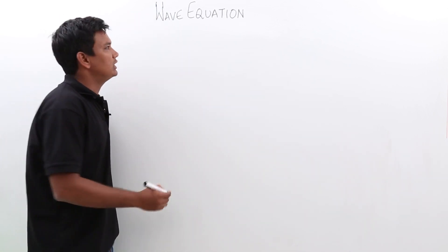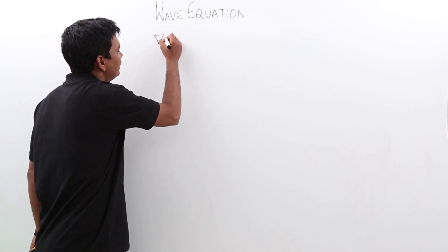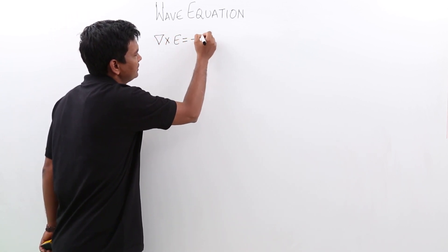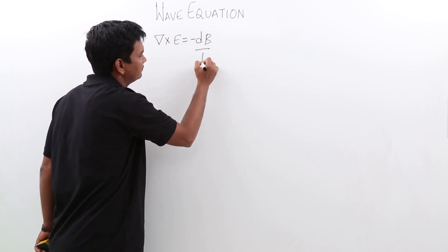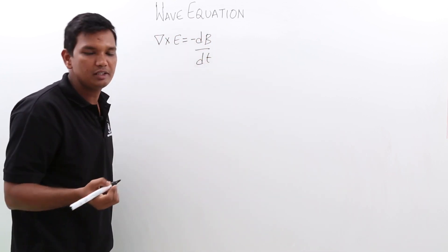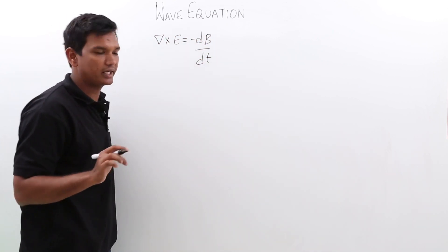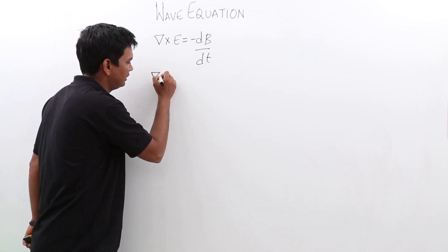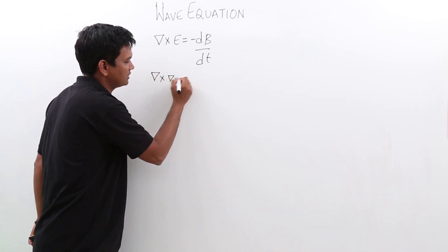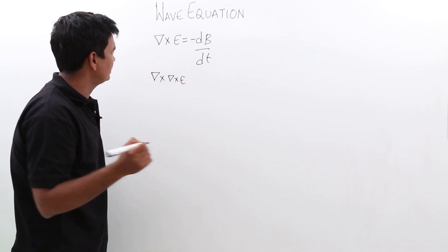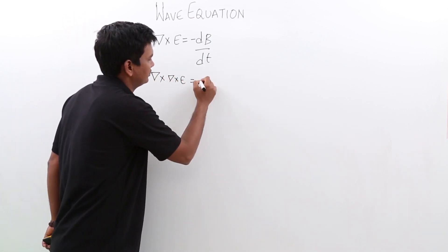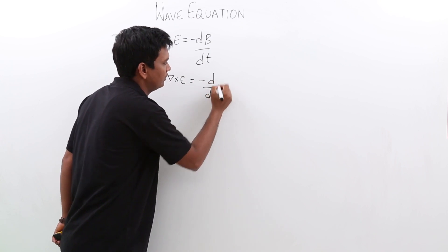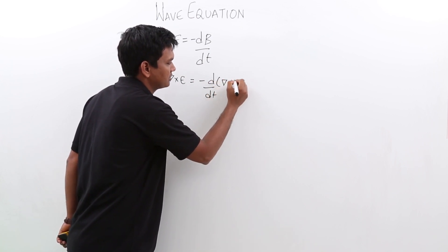We know the Maxwell equation: del cross E is minus dB by dt. We have already seen this in the previous lecture and even proved it. Now let me take del cross of del cross E — I call it a triple product. It will be nothing but d by dt of del cross B.